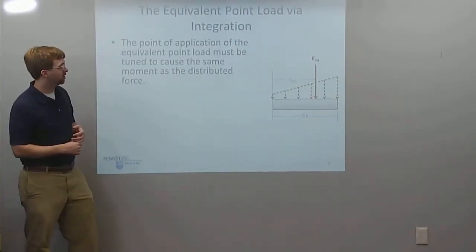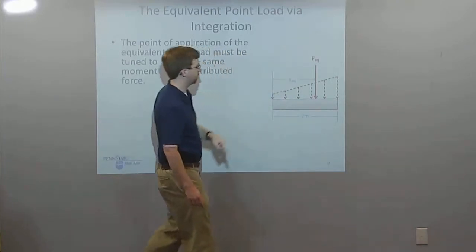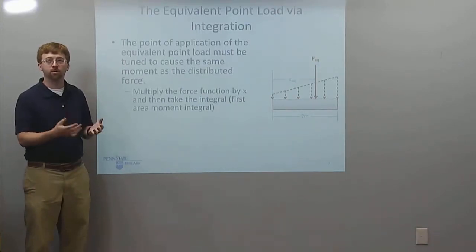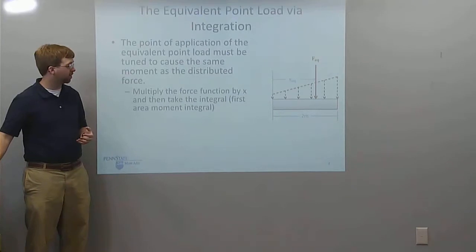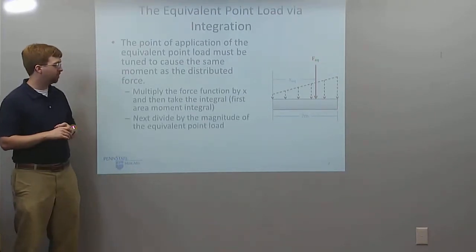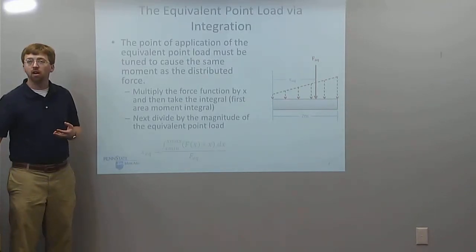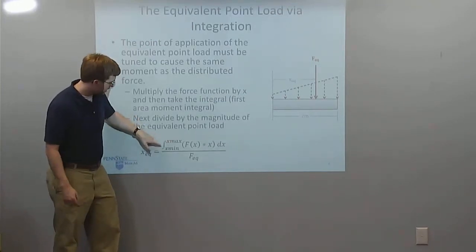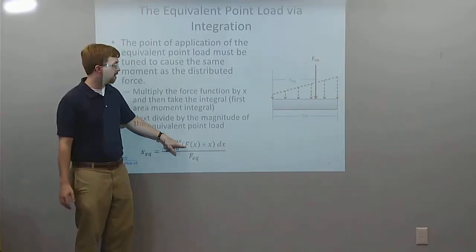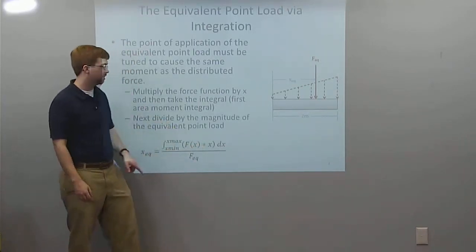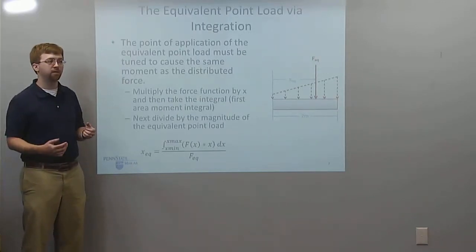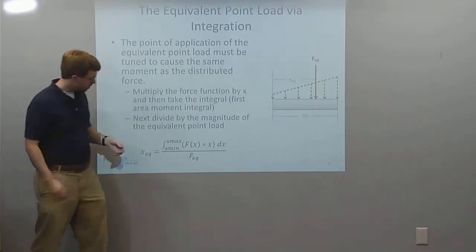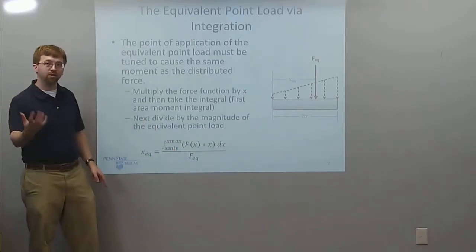Next, we need to find the point of application X_EQ. We multiply the force function by x and take the integral — this is called the first area moment integral — and divide that by F_EQ. So it's the integral from x_min to x_max of f(x) times x dx, divided by F_EQ. In my example, rather than integrating x + 1, I'm taking the integral of x² + x, because that's (x + 1) times x, divided by F_EQ.